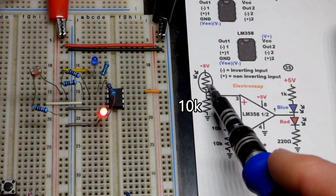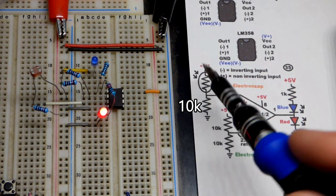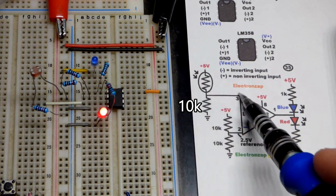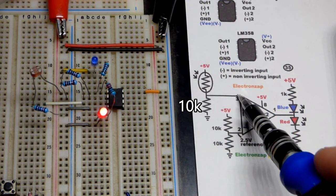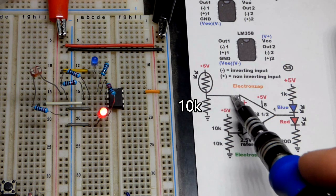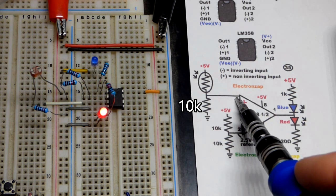Right now we have enough light falling on the light-dependent resistor to raise the voltage above 2.5 volts. We know that because the red LED is lit up—the output is high. We have a higher voltage at the non-inverting input than the inverting input.